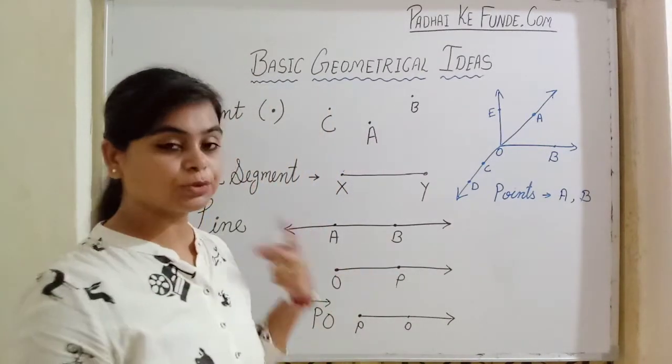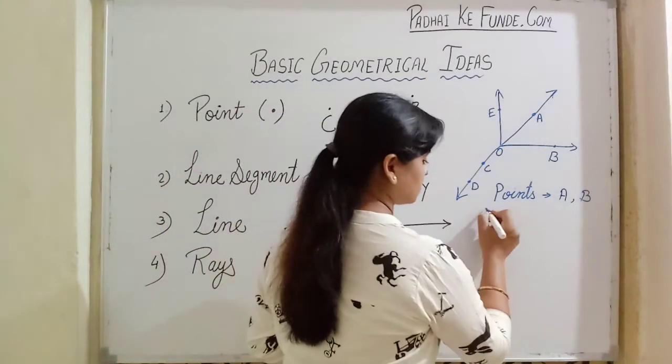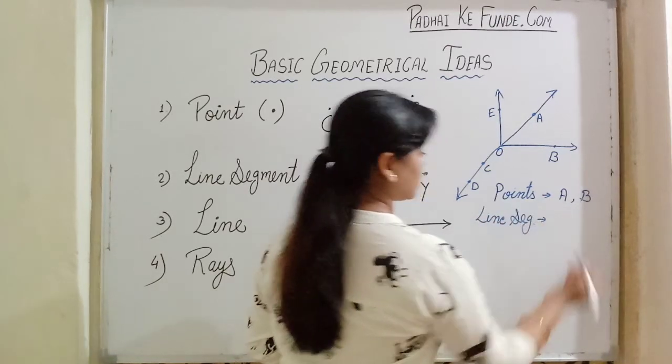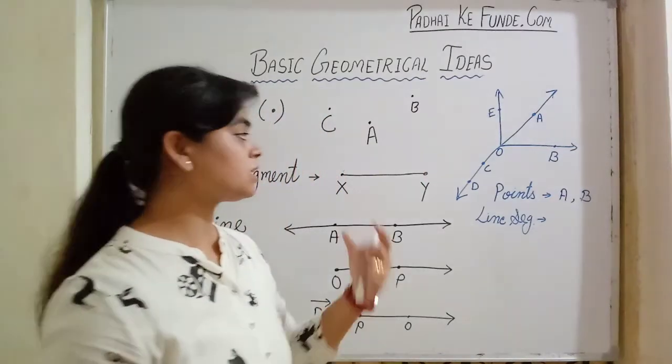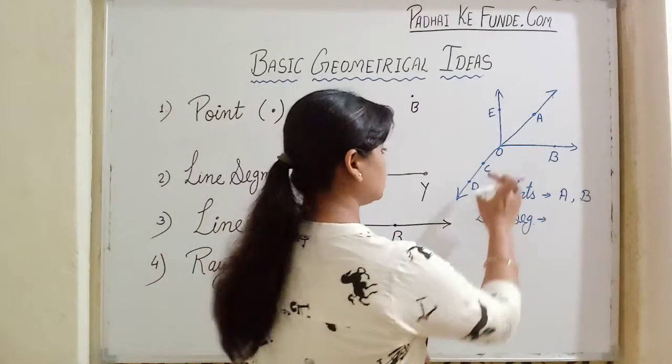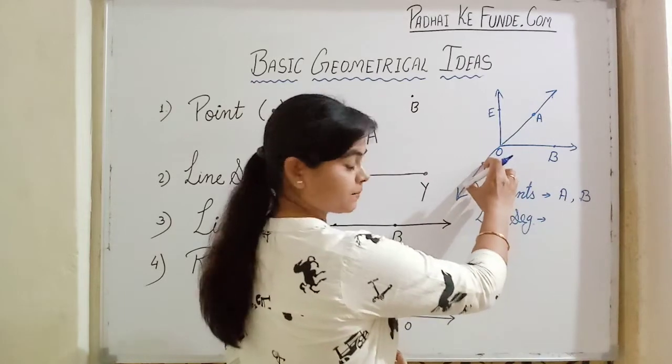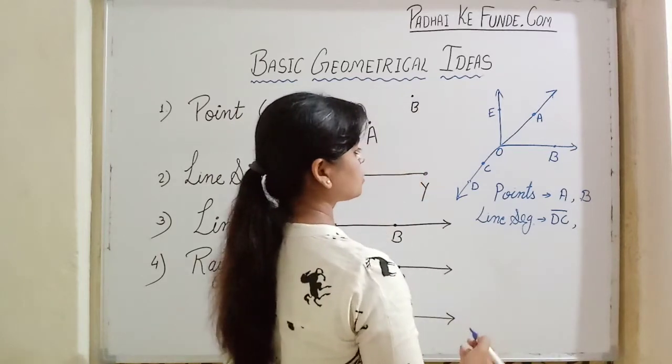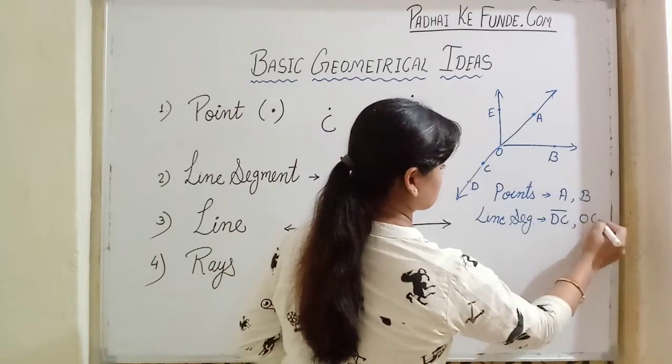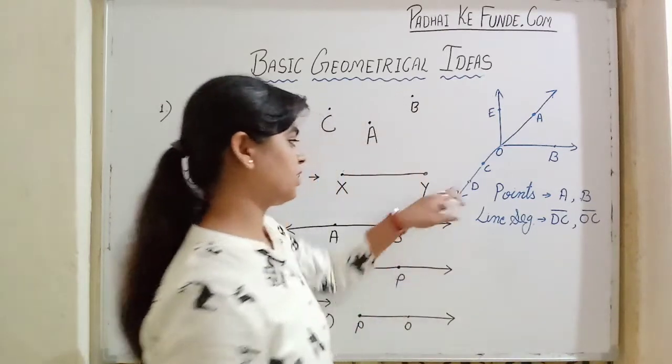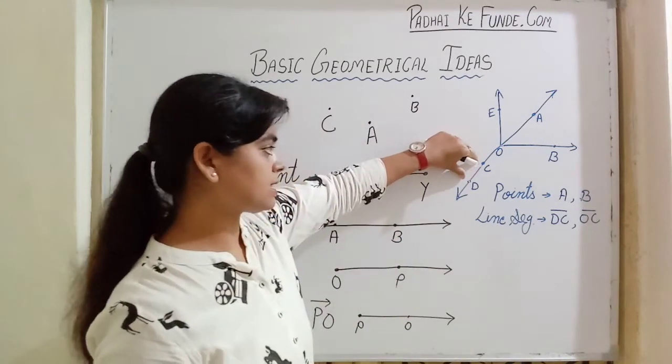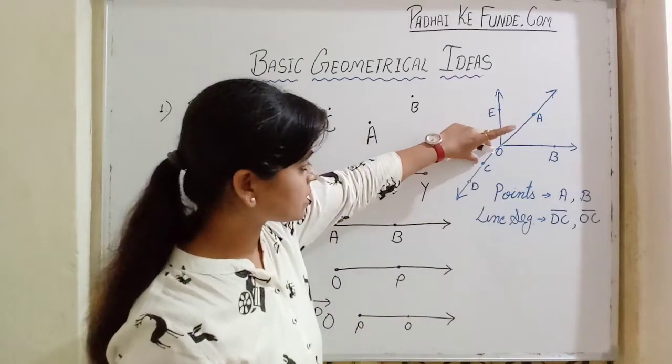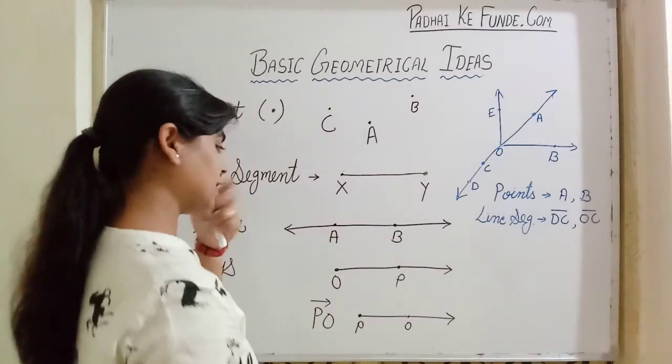If we are asked to name any two line segments here, that means it should have a starting point also and end point also. So we can talk about DC and also OC because we have both the points. The distance between D and C will be called line segment DC. The distance between C and O will be called line segment OC.